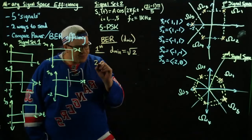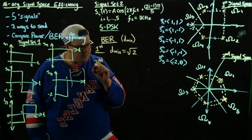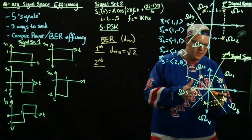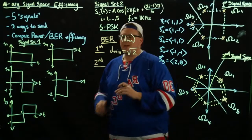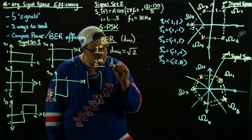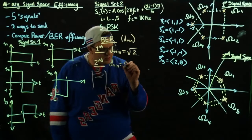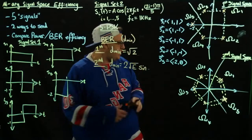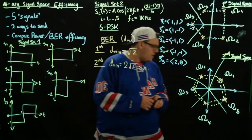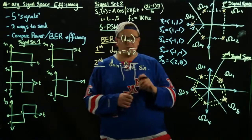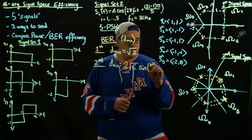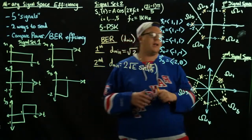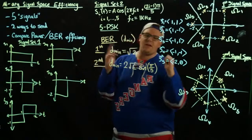For the second one, this is a little bit more complicated. But we can relate the distance between signals to the energy. The d_min for a PSK constellation is equal to two times the square root of the energy times the sine of pi divided by the number of signals in the array. Here that number is five, so for nine PSK it would be nine, and for eight PSK it would be eight.